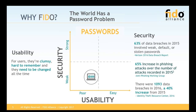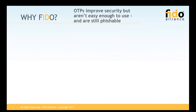So why are all these companies working together in FIDO? The world has a password problem. If you look at the matrix of usability and security, passwords are clumsy, hard to remember, and need to be changed all the time. There's a usability issue which results in passwords such as 'password' or '123456,' which then leads to weak security. The vast majority of data breaches have involved weak, default, or stolen passwords, and phishing attacks are growing at an increasing rate, as are data breaches. There were nearly 1,100 data breaches last year, an increase from 2015.